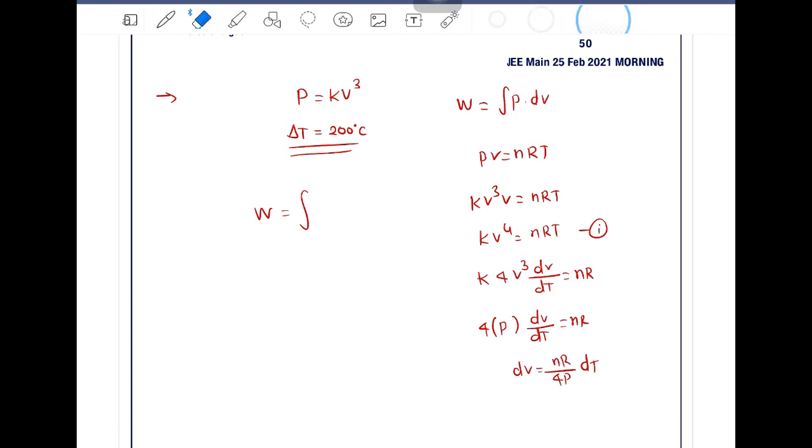We can adjust this: P dV = (nR ΔT)/4. So instead of P dV, we put (nR dT)/4. So work is equal to (nR/4) ∫dT.